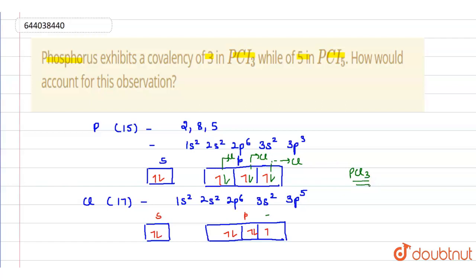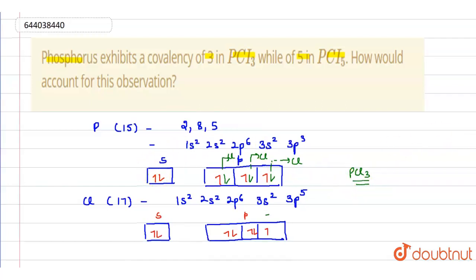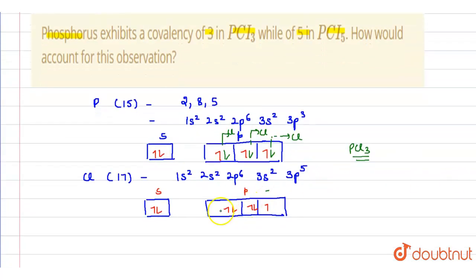But for the formation of PCl5 molecule, one electron gets excited. How does this excitation of electrons occur? This is the ground state for phosphorus. In excited state, what will happen? This one electron gets excited to the d subshell. This is s subshell, this is p subshell.